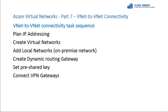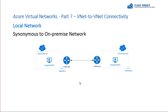The task sequence is: first, plan IP addressing; second, create the virtual networks; third, add the local network (the cloud term for the on-premises network); fourth, create a dynamic routing gateway; fifth, create and set the pre-shared key; and finally, connect the two VPN gateways to establish the tunnel.